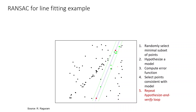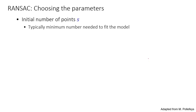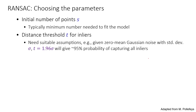Choosing RANSAC parameters: repeat n times — draw s points uniformly at random (for a line, s = 2); fit the model with these s points; find inliers among the remaining points whose distance to the model is less than t; if there are d or more inliers, accept the model and refit using all inliers. The initial number of points s is typically the minimum number needed to fit the model. The distance threshold t for inliers must be correctly chosen.